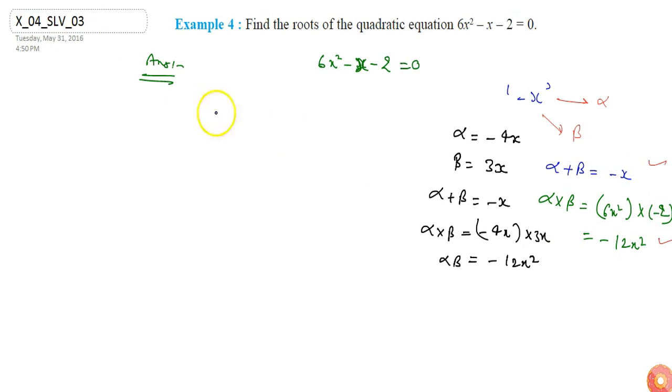So we can replace minus x with two terms alpha and beta. So the equation will be 6x square minus 4x plus 3x minus 2. We splitted the middle term into two terms minus 4x plus 3x.